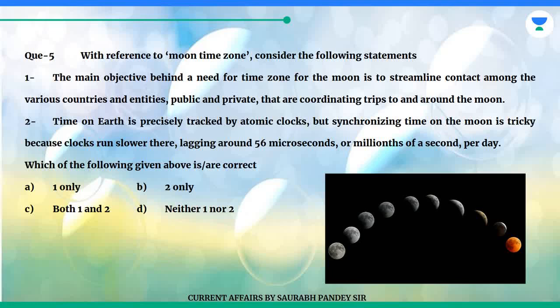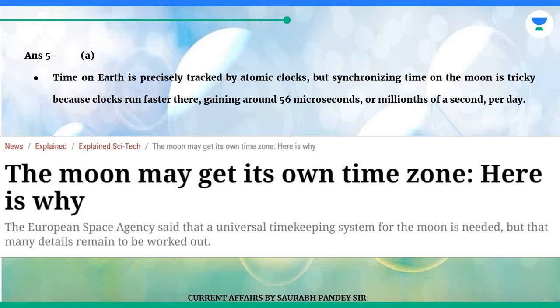Which of the following given above is correct? A. One only. B. Two only. C. Both one and two. D. Neither one nor two. The answer is A. Time on Earth is precisely tracked by atomic clocks, but synchronising time on the Moon is tricky because clocks run faster there, gaining around 56 microseconds per day.